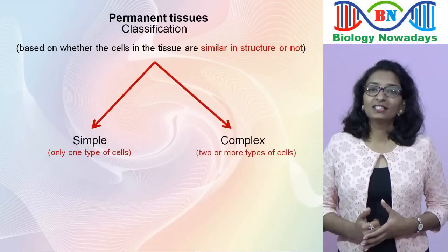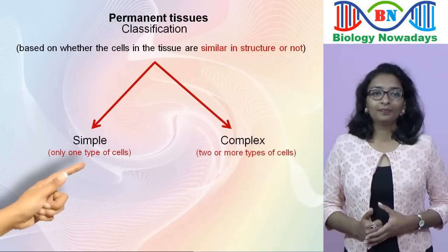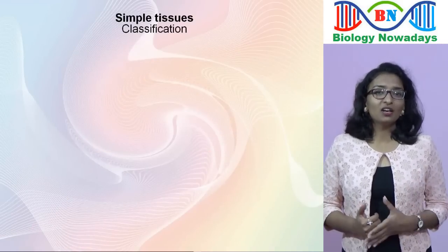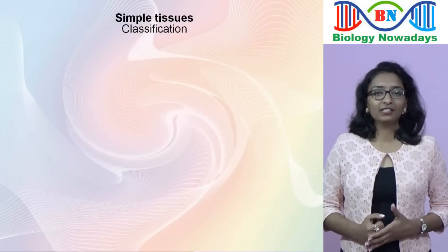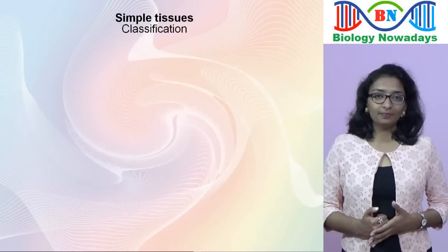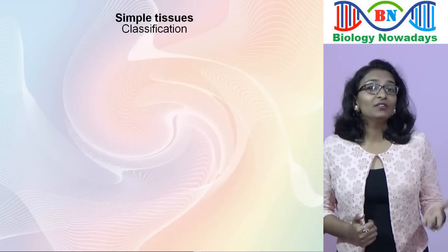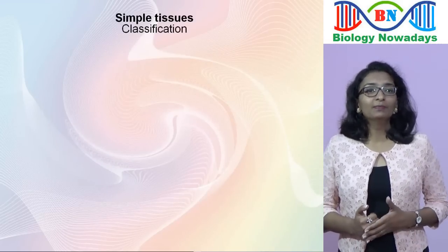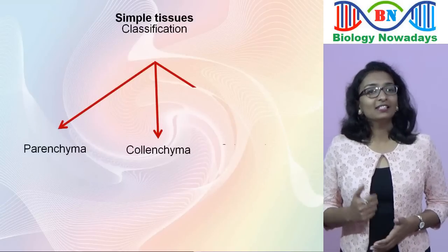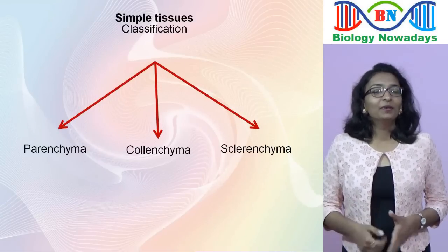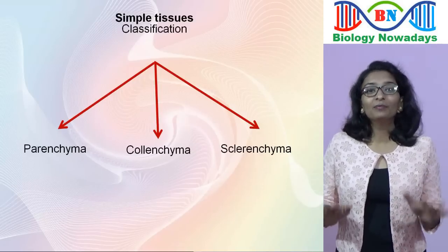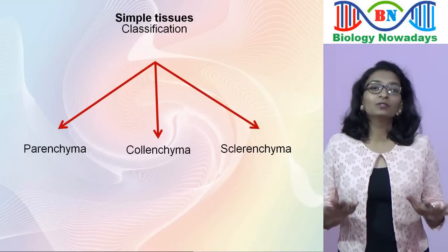Let's see about simple tissues in detail. As I just mentioned, simple tissues are composed of only one type of cells — the cells are similar in structure and function. There are mainly three types of simple tissues: parenchyma, colenchyma and sclerenchyma. But before we get into these tissues in detail, let me clarify some terminologies used in anatomy.